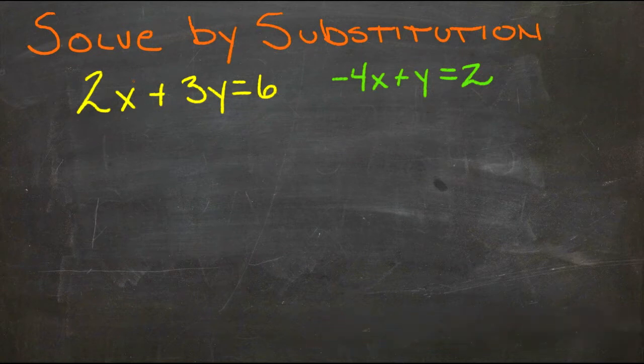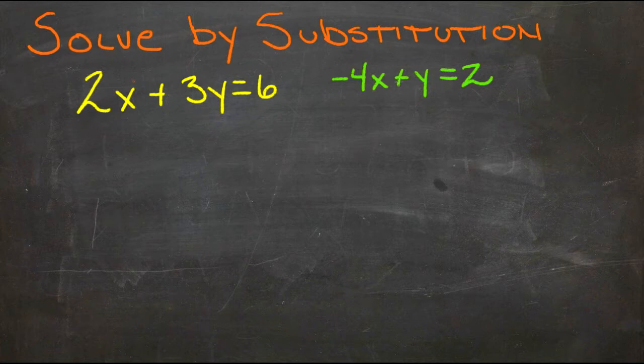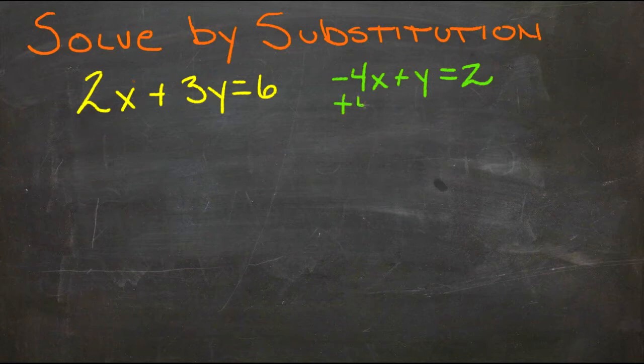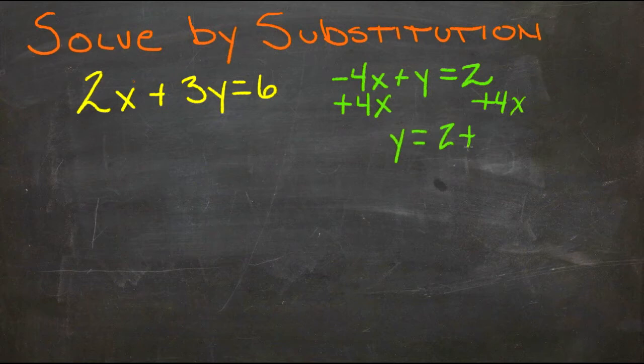So let's start. We're going to start with the equation on the right, since it just has a single y. It will be relatively easy to solve that one for y. All we need to do is get rid of the negative 4x on this side so that y is by itself. We do that by doing the opposite, so we add 4x over here, and we add 4x over here. So we get y equals 2 plus 4x.